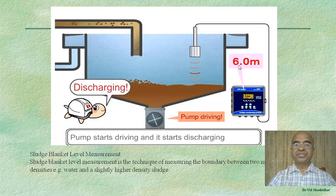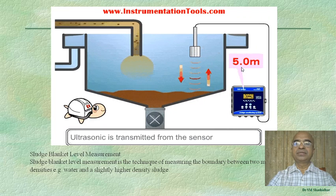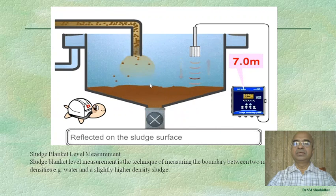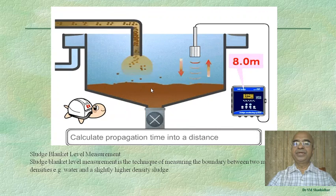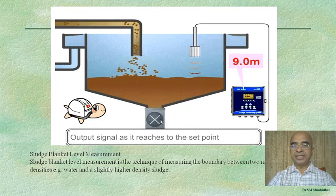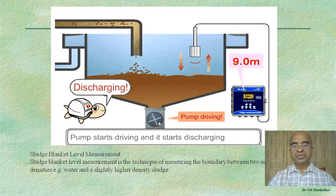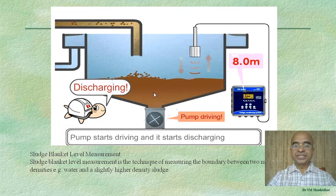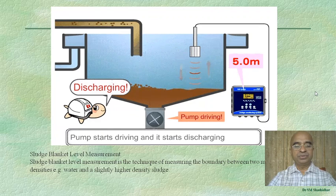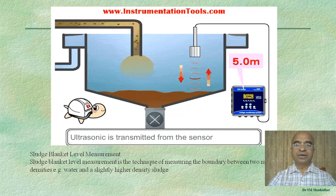The sludge level is continuously changing. When it drops to 5 meters, the valve is closed and sludge flows from the pipe into the tank again. When it reaches 8 to 9 meters, the valve opens and the sludge is discharged. This is one example of how liquid or sludge level monitoring is done in practice.